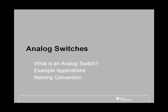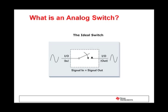In the first section, we cover analog switches — what is an analog switch, example applications, and the naming convention. In an ideal switch, whatever input is applied to the switch should appear at the output or vice versa. But in the real world, that is not true, and switches always have some losses.